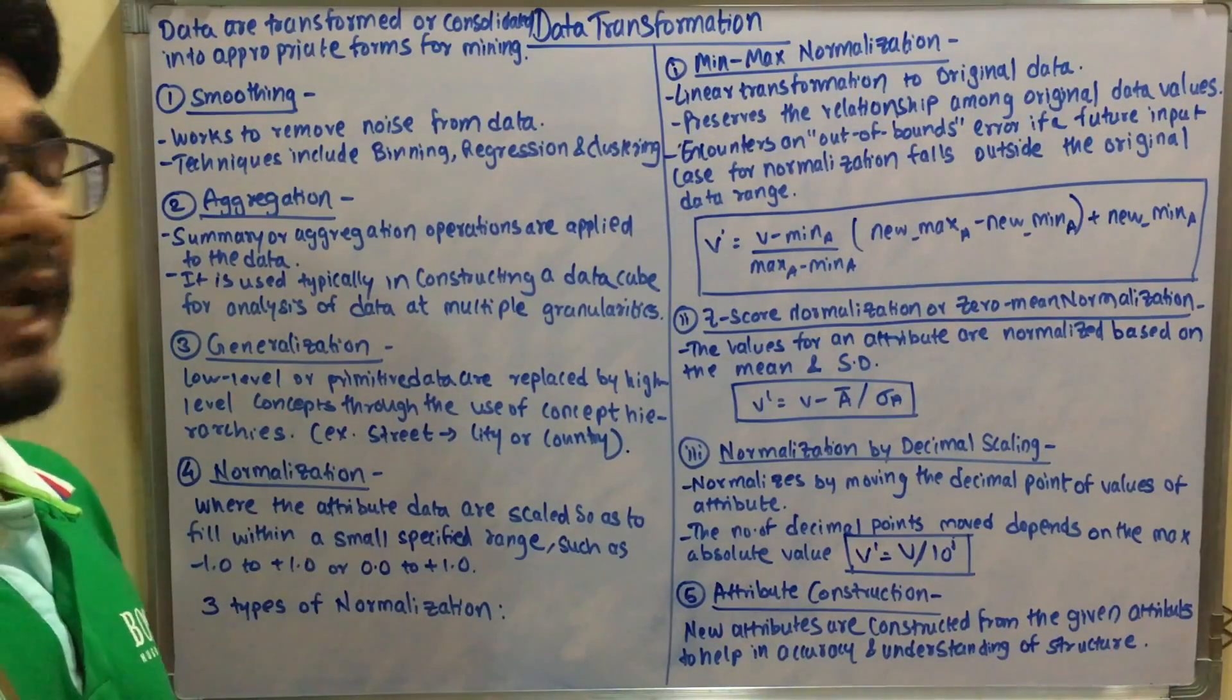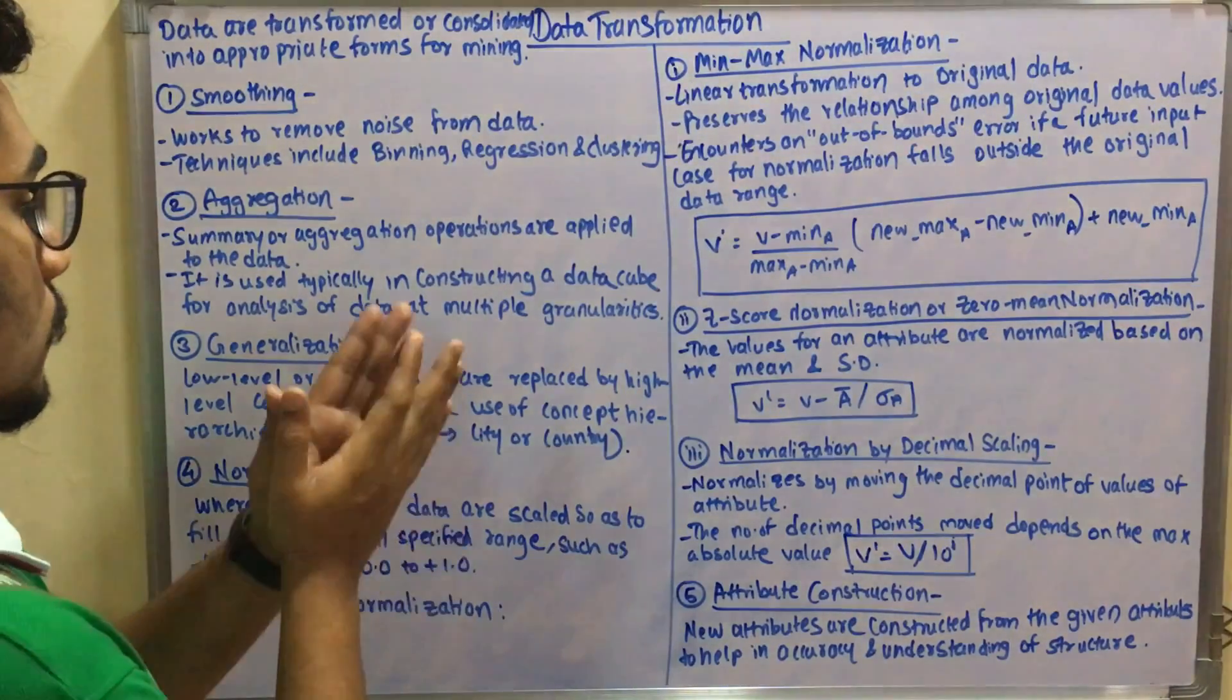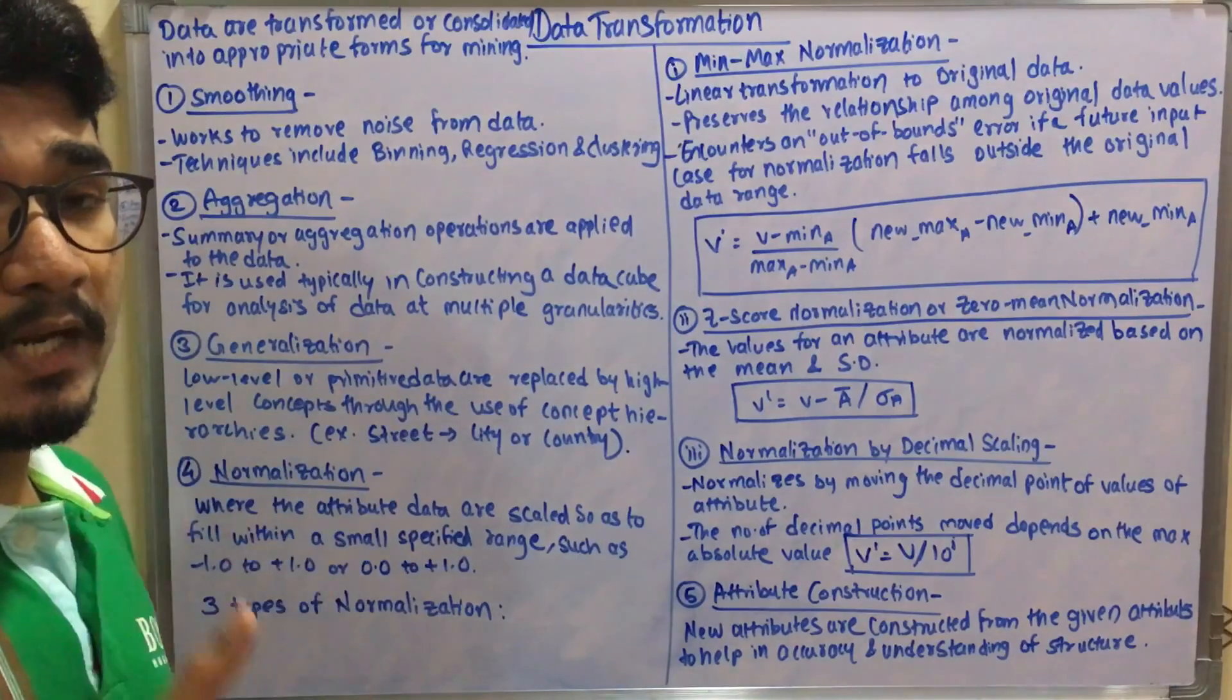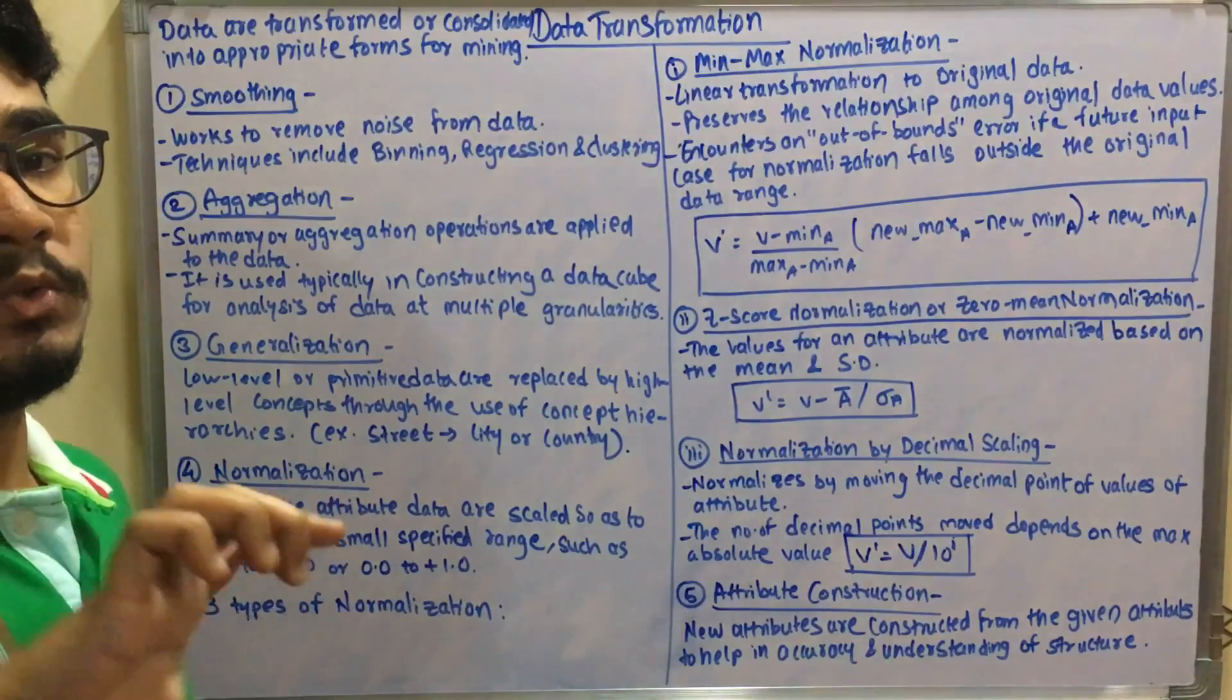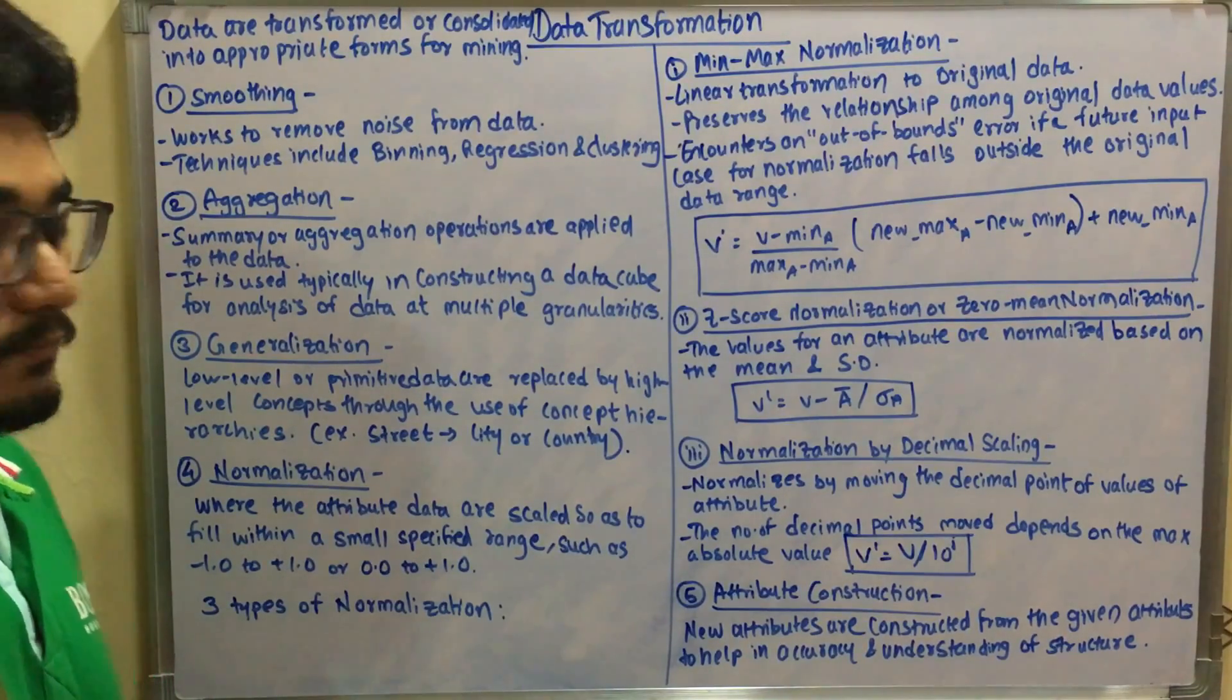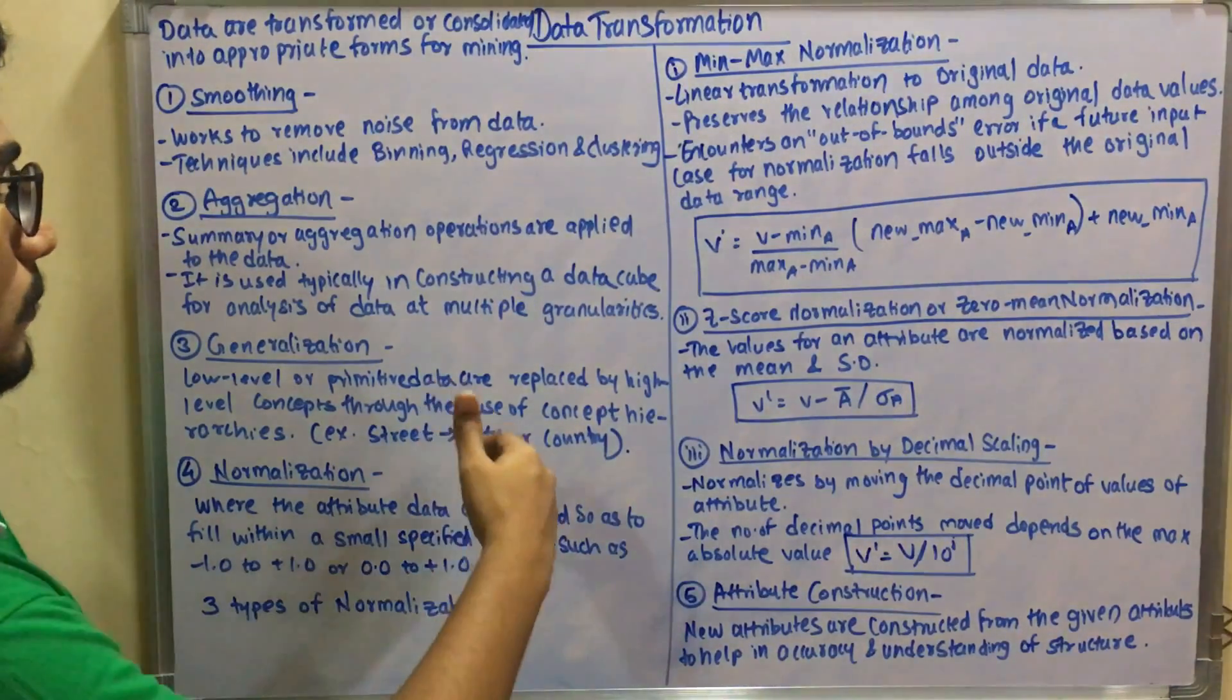Next you have the generalization techniques. Generalization is where you have a low level or primitive concept, the raw data, and that raw data or low level data is replaced by a higher level concept through use of concept hierarchy. For example, you have data like a street, that is raw data or primitive data, so that street is replaced by some higher level concept like city, country, or continent.